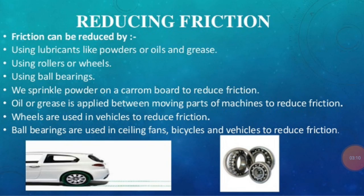There are some other ways also used to reduce friction. Friction can be reduced by using lubricants like powders, oils, and grease. It can be reduced by using rollers or wheels. It can be reduced by using ball bearings. If we sprinkle powder on a carom board, it reduces the friction. Oil and grease are applied between the moving parts of a machine to reduce friction. Ball bearings are used in ceiling fans, bicycles, and vehicles to reduce friction.